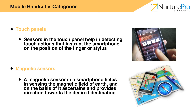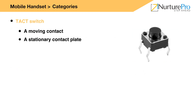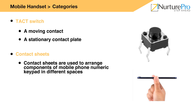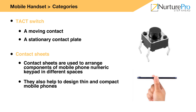Tact switches are used in keypads, keyboards, or instruments. They respond to a press of the on or off button or switch. When the tact switch makes contact with the control panel — in several cases, just a printed circuit board (PCB) — all tact switches contain two elements: a moving contact and a stationary contact plate. When the tact switch is on, these two elements come in contact with each other and the circuit becomes on. Metal contacts used in the tact switch are organized on sheets. Contact sheets enable the arrangement of various switches — for instance, they are used to arrange components of a mobile phone numeric keypad in different spaces. They also help to design thin and compact mobile phones.